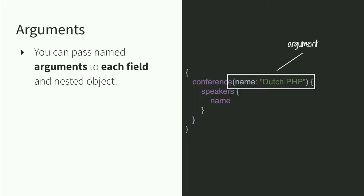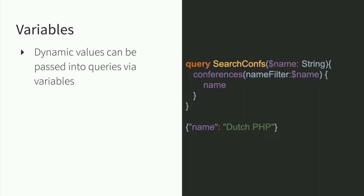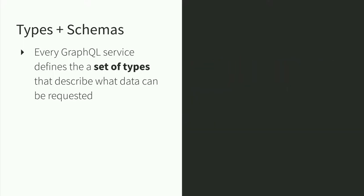Queries can have arguments. You can pass named arguments to each field. If you want to filter, paginate, sort, or search for data, you can pass in arguments and handle those on the server side. From the client side, you can also use variables to pass in dynamic data into the arguments you're using in your query.